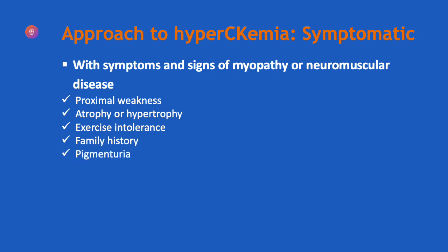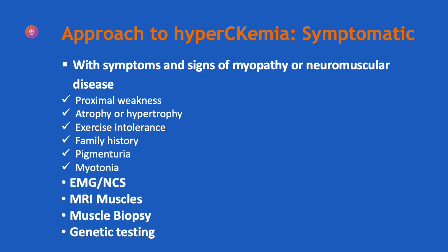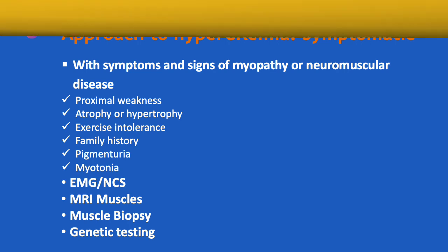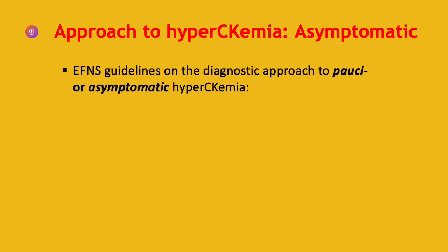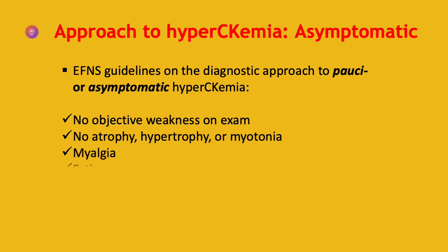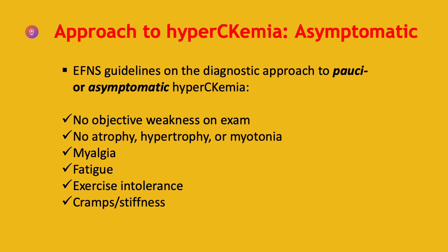For asymptomatic patients with elevated CK level: some patients may present with symptoms and signs of myopathy or neuromuscular disease. Pauci-symptomatic patients are those who do not have objective signs of muscle disease such as muscle weakness, atrophy, hypertrophy, or myotonia, but who have nonspecific symptoms such as myalgia, undue fatigue, exercise intolerance, cramps, and stiffness.